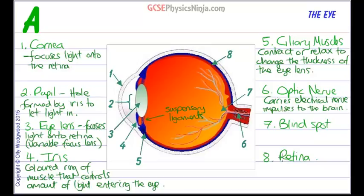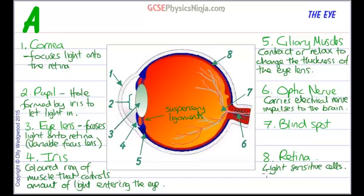Number 8 is the retina, which is the coating at the back of the eye containing rods and cones — light-sensitive cells. Those light-sensitive cells convert light into electrical nerve impulses, which are then sent via the optic nerve to the brain.